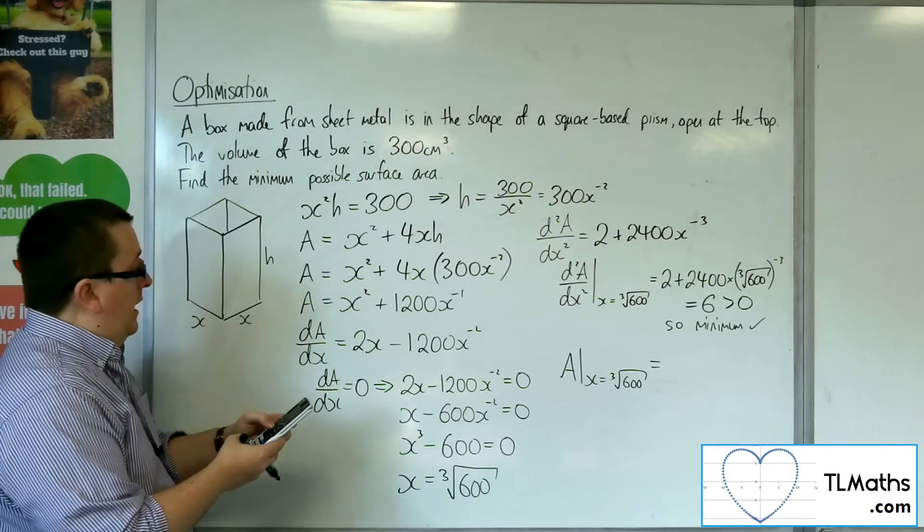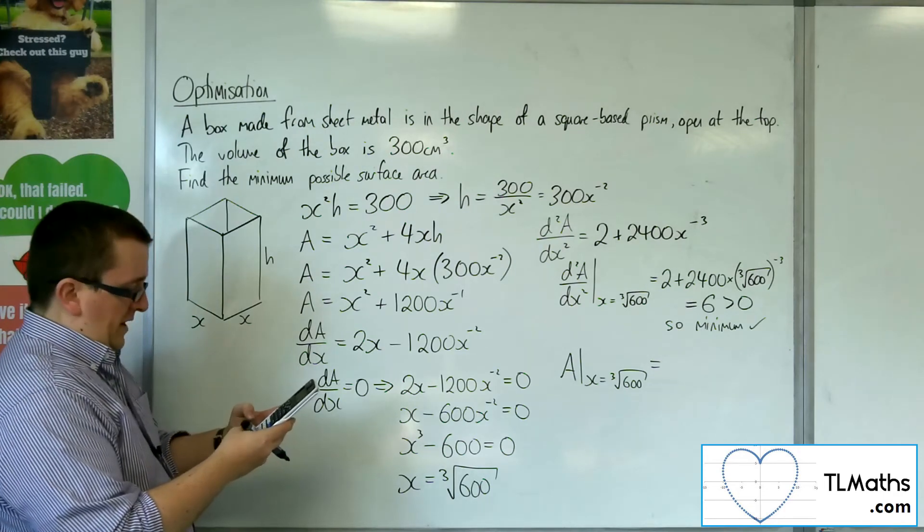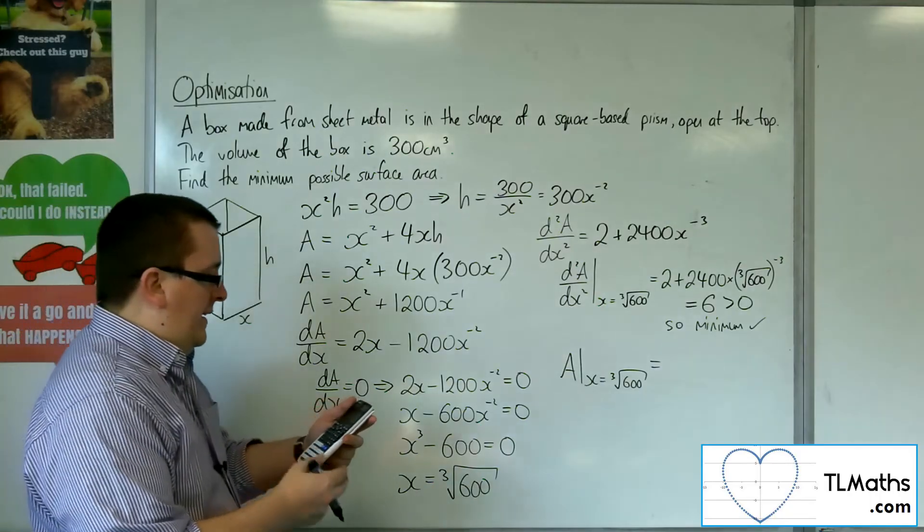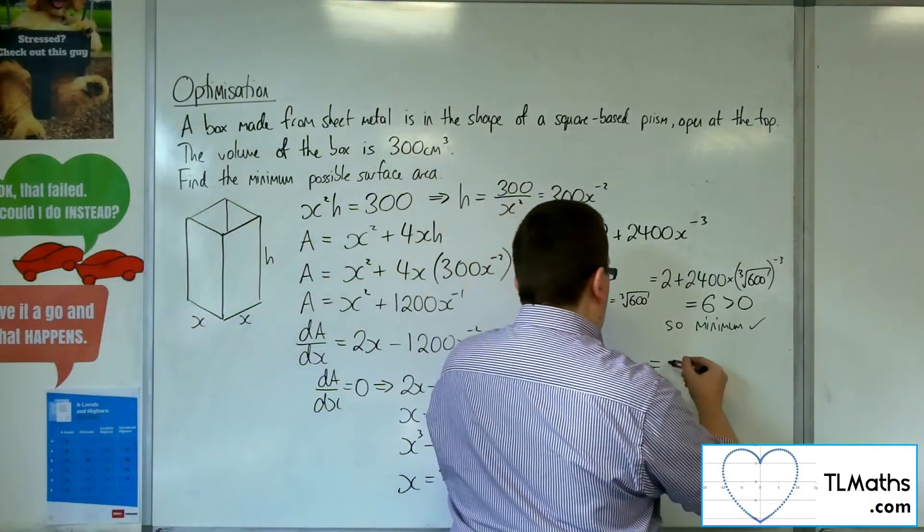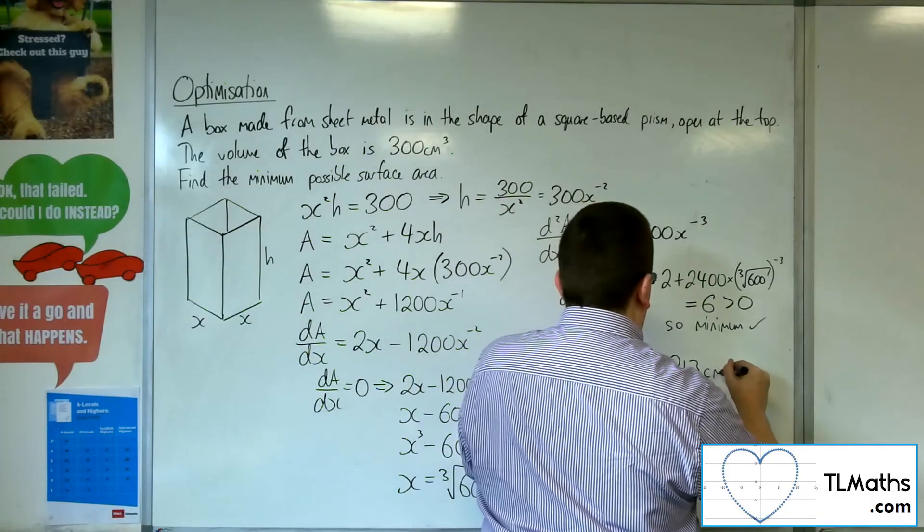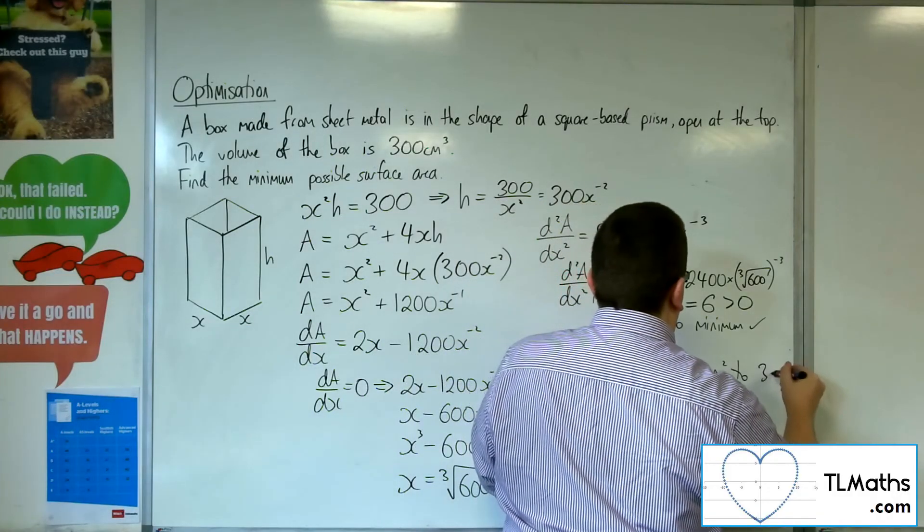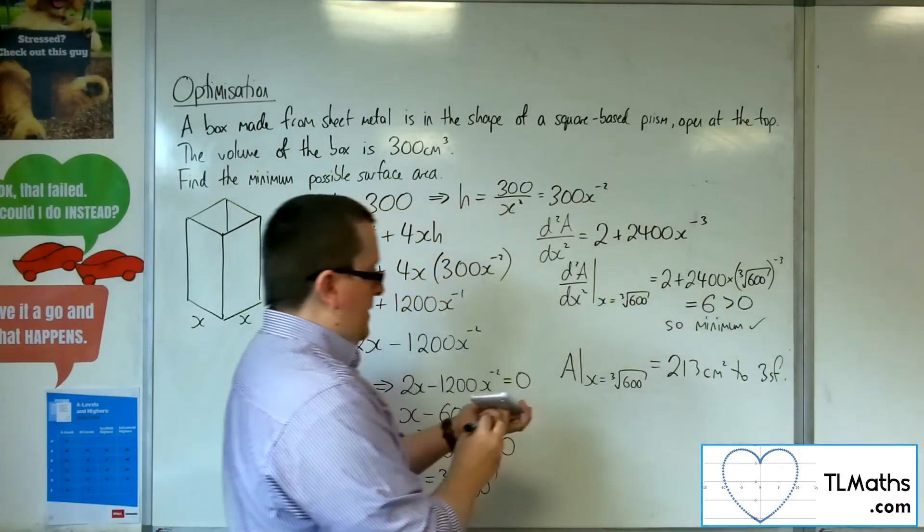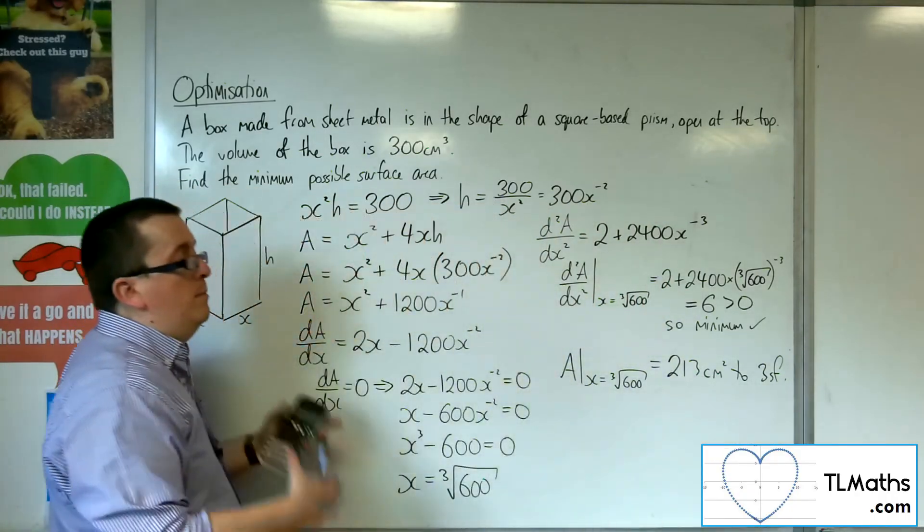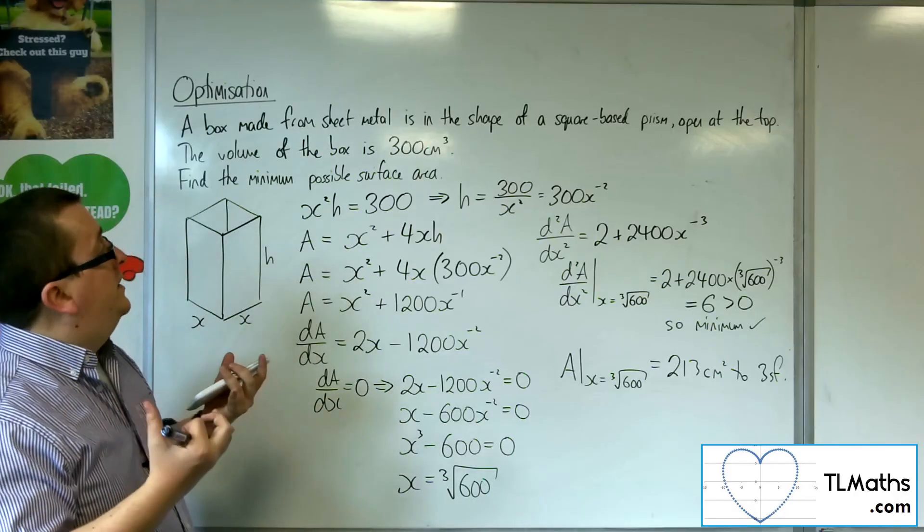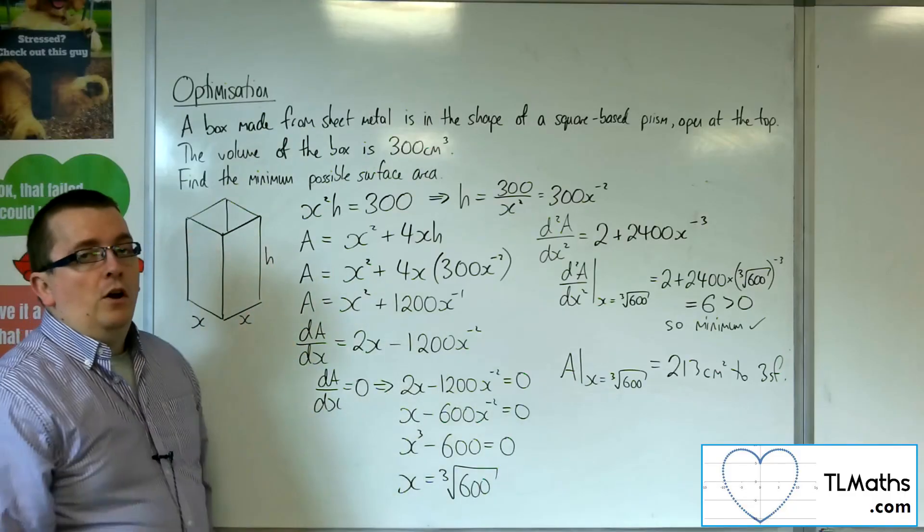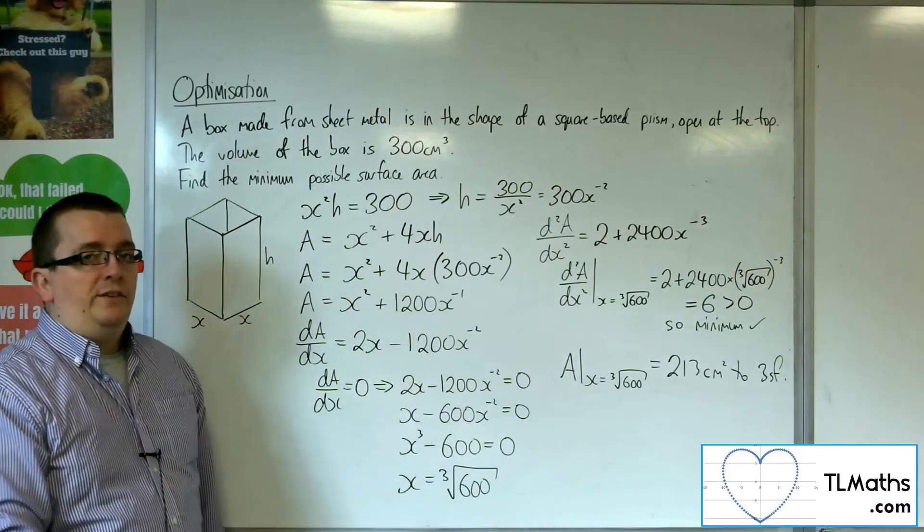So I'm going to get the answer squared plus 1200 times the answer to the power of minus 1. And that gets me 213.413, etc. Centimeters squared to 3 significant figures. Okay, so that is the minimum area that I need to give myself a box that has volume of 300 cubic centimeters.